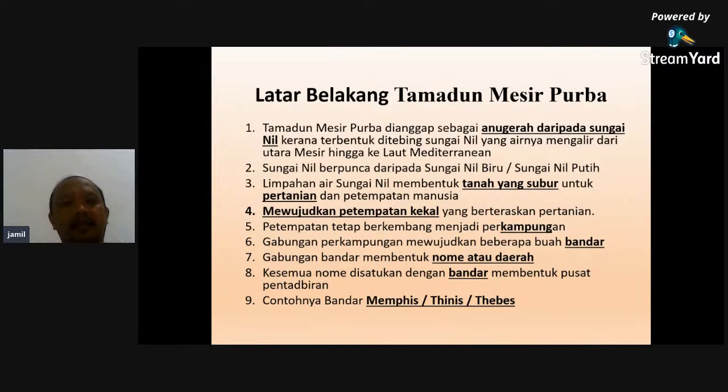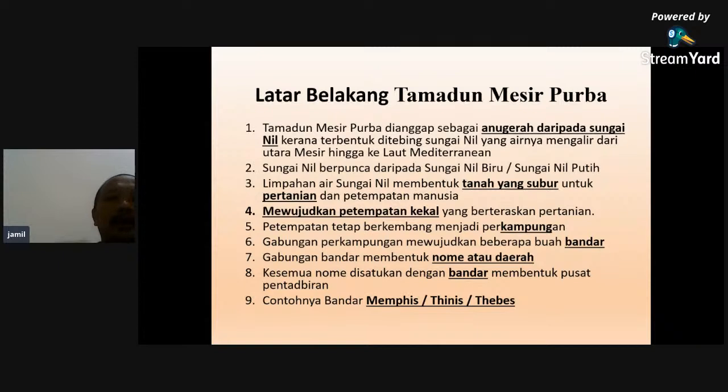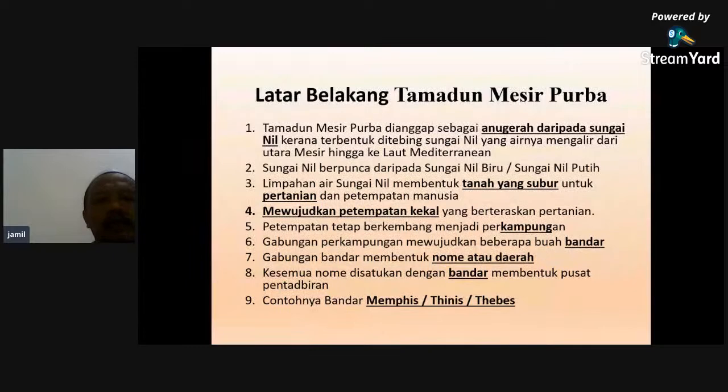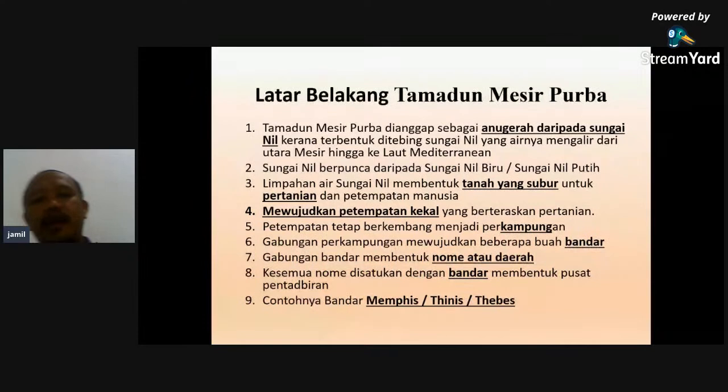Sungai Nil mengalir dari utara Mesir hingga ke Laut Mediterranean. Sebab itu tamadun Mesir dikenali sebagai 'anugerah daripada sungai Nil'. Yang penting pelajar kena ingat: tamadun Mesir Purba wujud dekat sungai Nil. Sungai Nil ada dua - sungai Nil biru dengan sungai Nil putih - tapi yang penting ingat: Mesir Purba dekat sungai Nil.